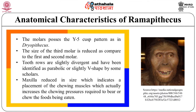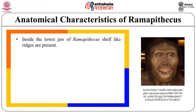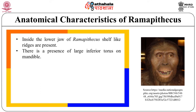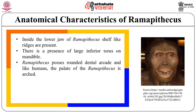The maxilla among Ramapithecus is reduced in size, which indicates a placement of the chewing muscles that actually increases the chewing pressure required to bear or chew the food being eaten. Inside the lower jaw, a shelf-like ridge was present. There is also a presence of a large inferior torus on the mandible or lower jaw. Ramapithecus possesses a round dental arch like humans, and the palate is arched.